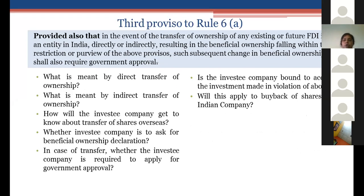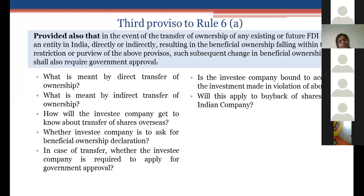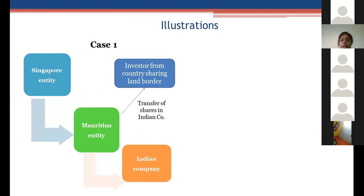The third proviso addresses any kind of transfer of ownership — existing or future FDI in an entity in India, directly or indirectly. Even a direct or indirect transfer of ownership, which results in the beneficial owner falling within the restriction of the first proviso — i.e., the beneficial owner belongs to or is a citizen of any of the seven land-border countries — can only happen with government approval. For example, an Indian company with investment from a Mauritius entity, where the Mauritius entity is held by a Singapore entity — the chain of indirect ownership becomes relevant here.